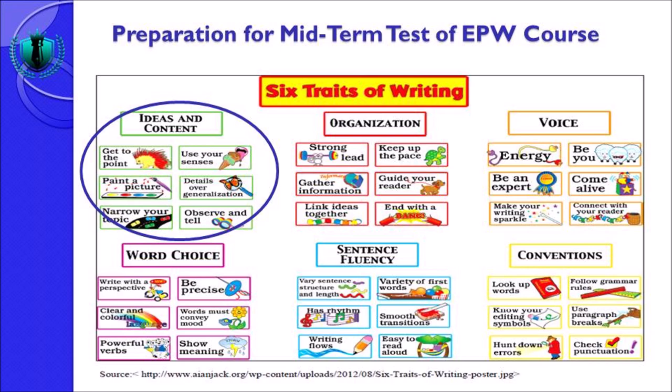Sebagai manusia anda ada 5 senses — panca indera. Ketika anda menulis anda bisa menggunakan panca indera: penglihatan, pendengaran, rasa, sentuhan, serta kecap atau lidah. Anda bisa mengutarakan pengalaman panca indera anda di dalam tulisan. Ini biasanya lebih banyak digunakan di genre descriptive — masalah genre nanti akan saya jelaskan di video berikut.